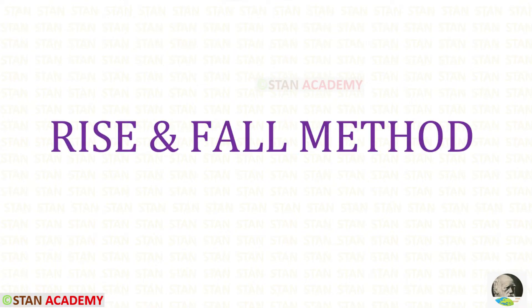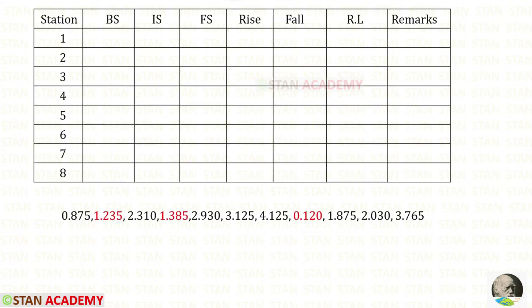First, let us do the problem by the rise and fall method. Let us make the table. In the table there will be: station, back sight, intermediate sight, foresight, rise, fall, reduced level, and remarks.